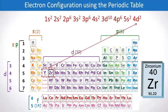And then, finally, a 4d2 for zirconium, which has 40 electrons.